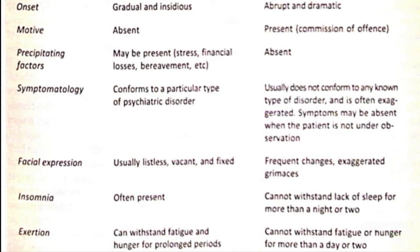Regarding onset, true insanity is gradual and insidious, meaning slow in onset, whereas feigned insanity is abrupt and dramatic — the person is falsely acting as if insane. Motive is absent in true insanity, but some motive such as commission of a crime is present in feigned insanity. Precipitating factors like stress, financial losses, and bereavement may be present in true insanity but are absent in feigned insanity.